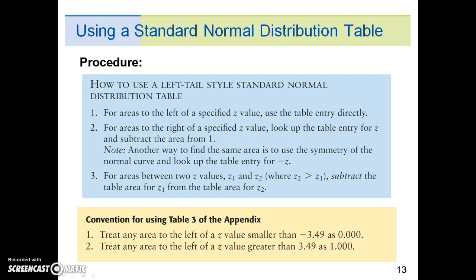So this is the procedure and summary of how to use the left-tailed style standard normal distribution table. There's three types of problems we might have. First, for areas to the left of a specified z value, use the table entry directly. Second, for areas to the right of a specified z value, look up the table entry for z-score z and subtract the area from 1.